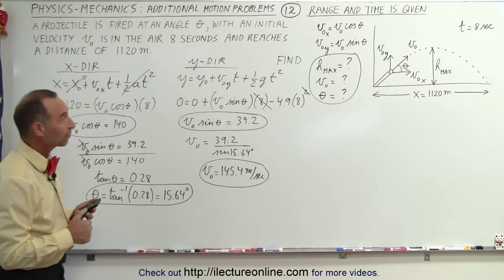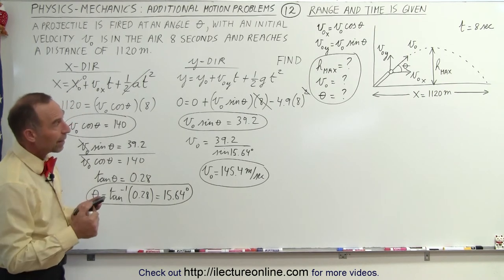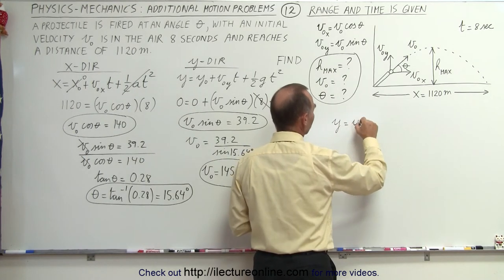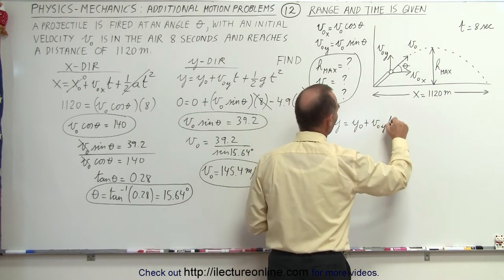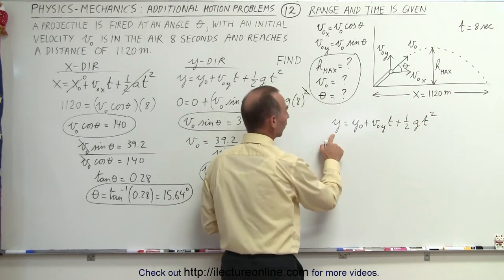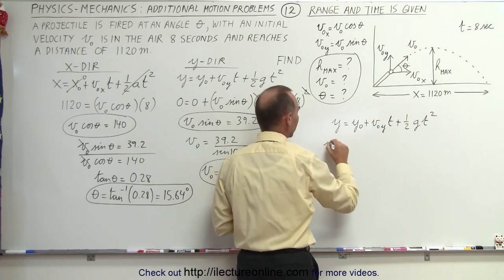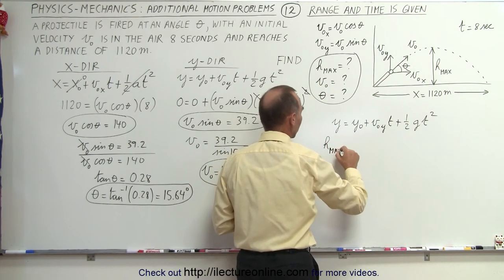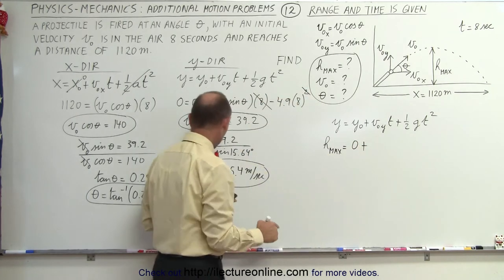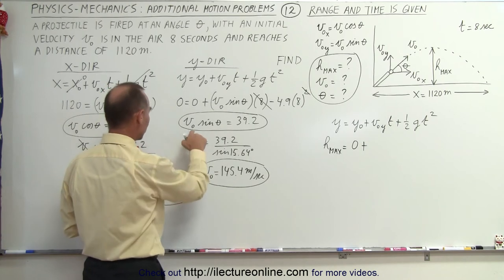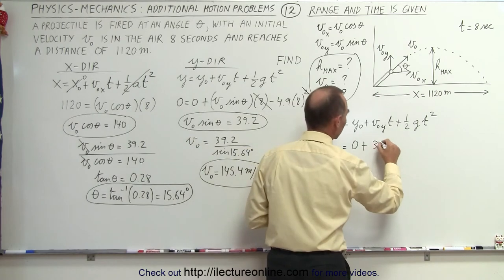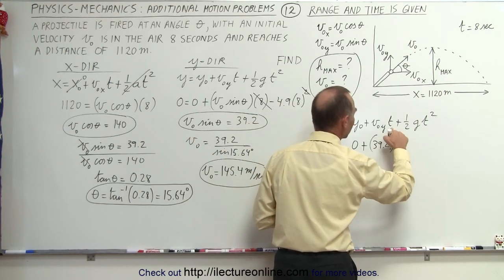Finally, we want to find the maximum height reached. Let's use the equation y equals y sub-naught plus v sub-naught in the y direction times time plus one-half gt squared. Because when we get to the very top, the maximum height is y, that's h max. The initial height was 0 plus the initial velocity in the y direction. The initial velocity in the y direction is v initial times the sine of theta, which is 39.2.